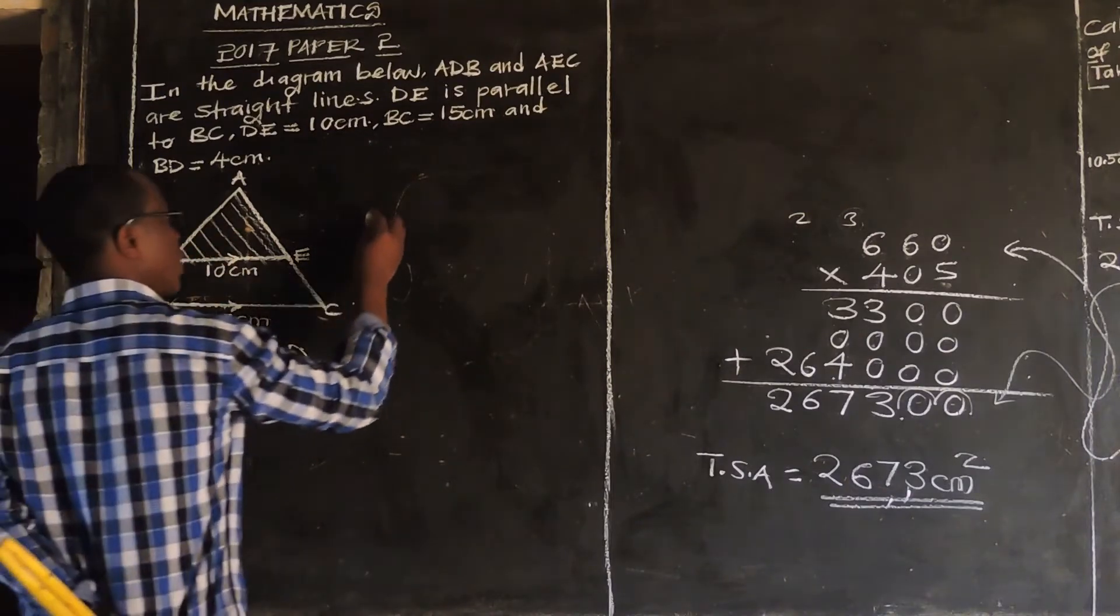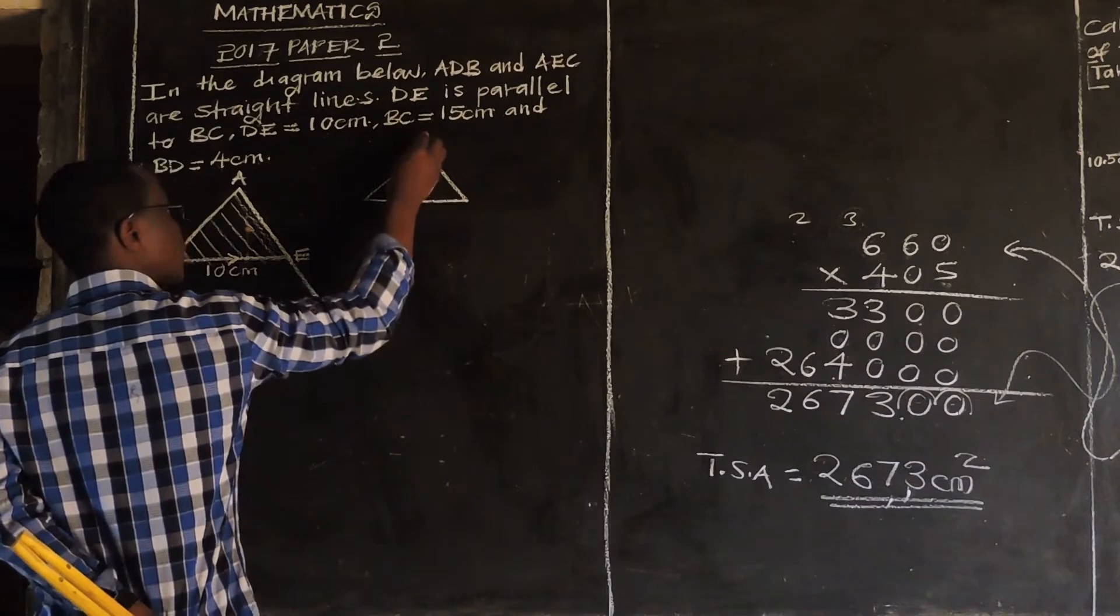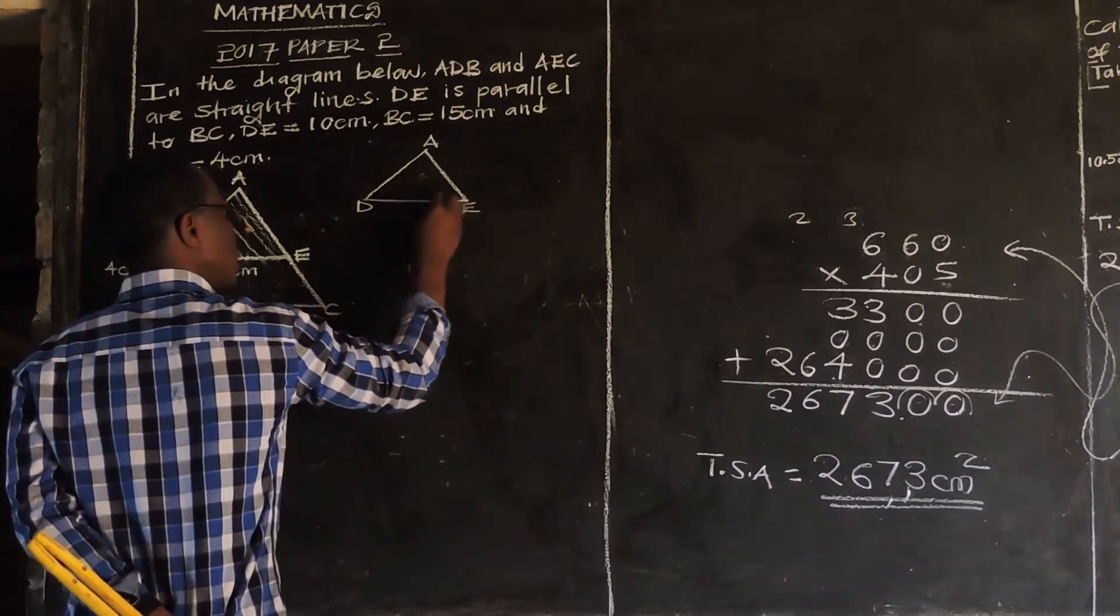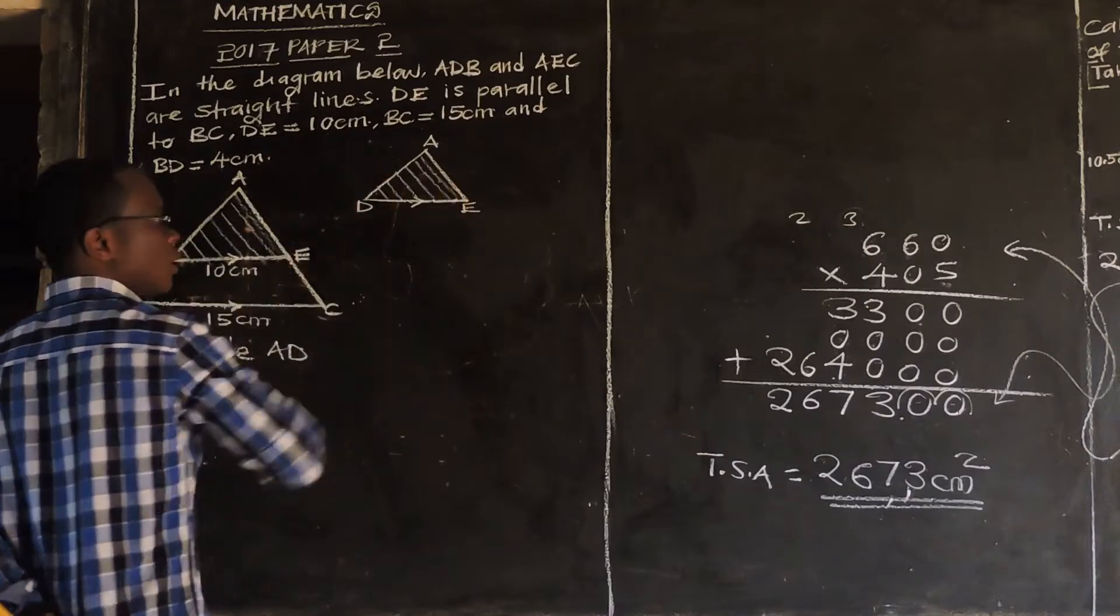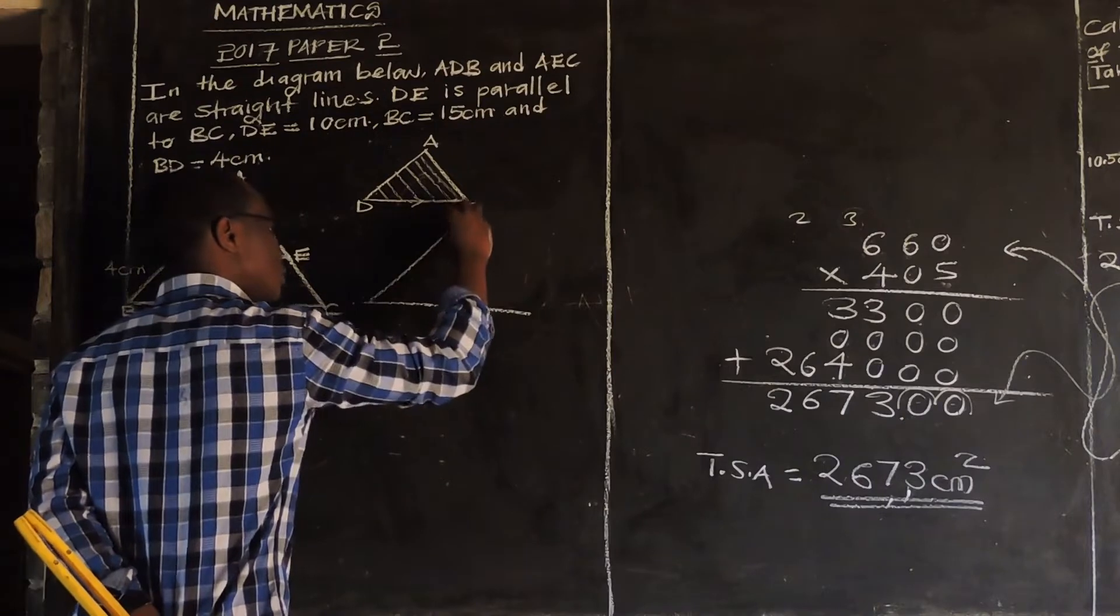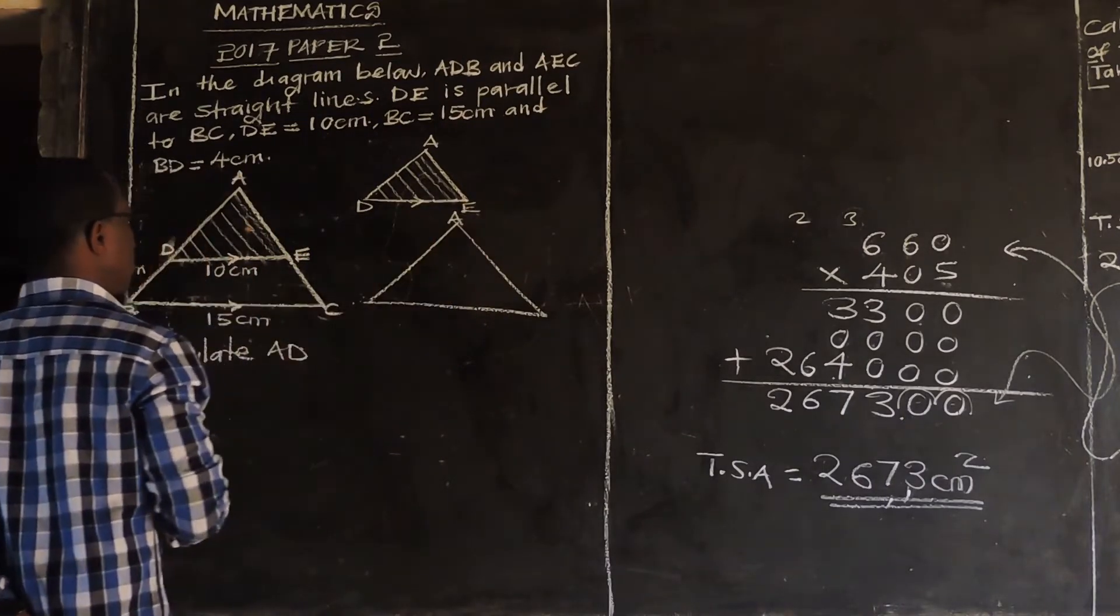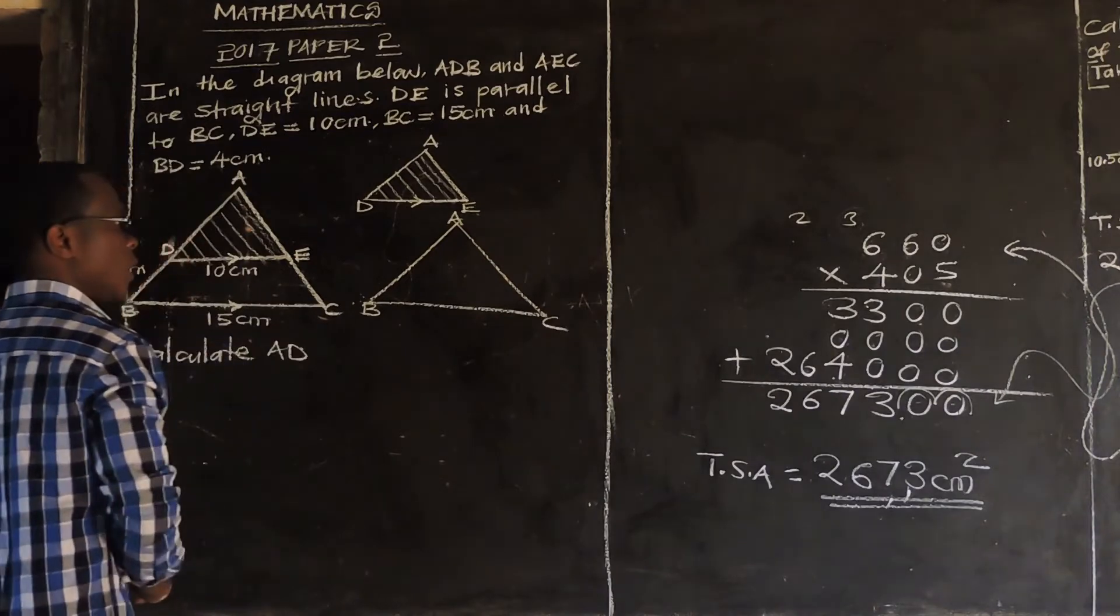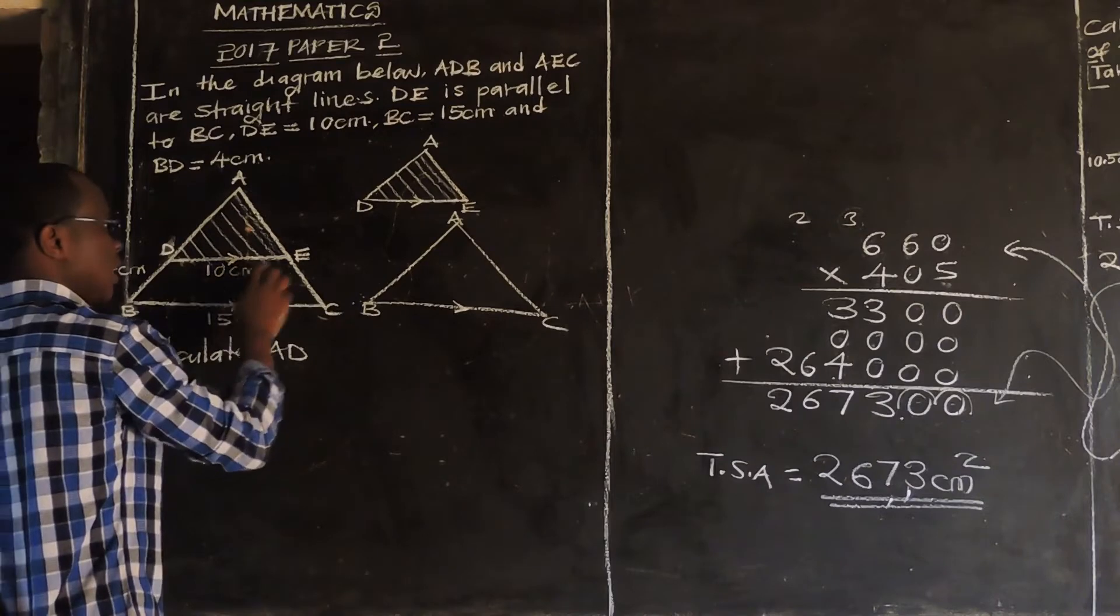So we have got a small triangle, which is appearing like this. This is point A, this is point D, and this is point E. This is the small triangle we are talking about. Then we have got also a big one.